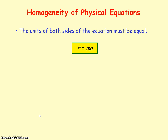Physical equations must be homogeneous, meaning the units of both sides of the equation must be equal. For example, in force equals mass times acceleration, the unit of force is the Newton. That must equal the units of mass times acceleration: kilograms multiplied by meters per second squared.